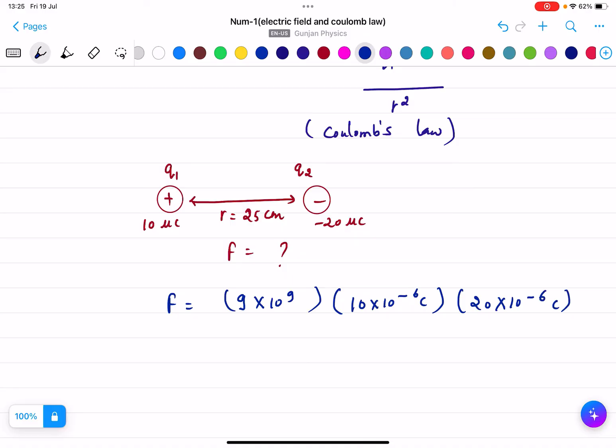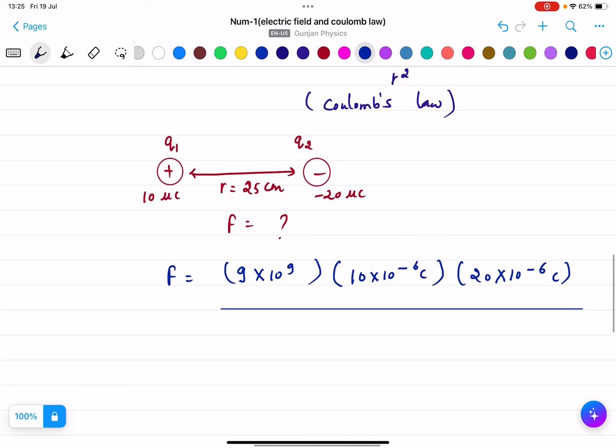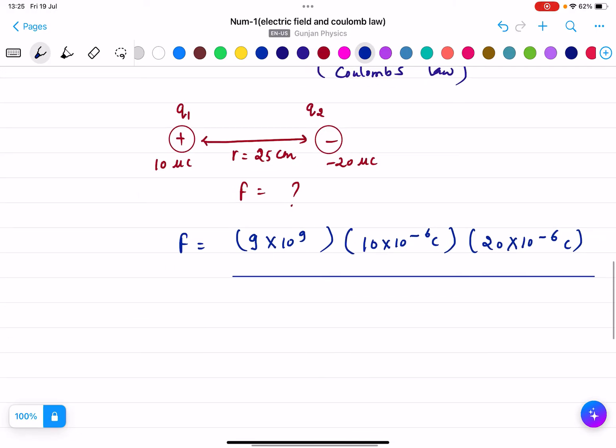Please note I have not mentioned the minus here because we need to find the magnitude, so the sign of the charge does not matter. And r² means (25 × 10⁻²)² meters squared.